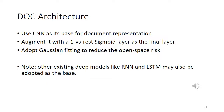The architecture of DOC is as follows: first, it uses a convolutional neural network as the base to get document representation. Then, it augments this with a one-versus-rest sigmoid layer as the final output layer. Finally, it adopts Gaussian fitting to reduce the open space risk. Note that other existing deep models like recurrent neural networks and LSTM may also be adopted as the base for document representation.